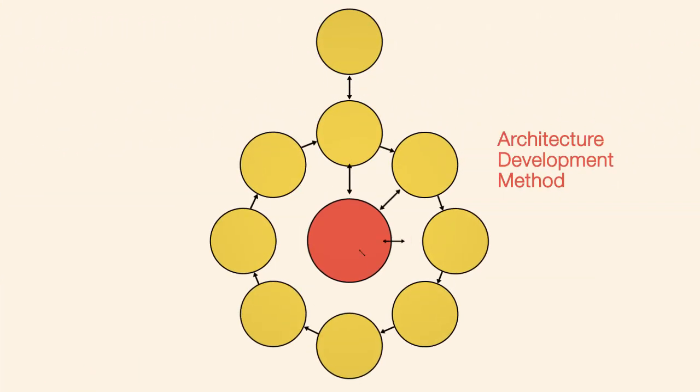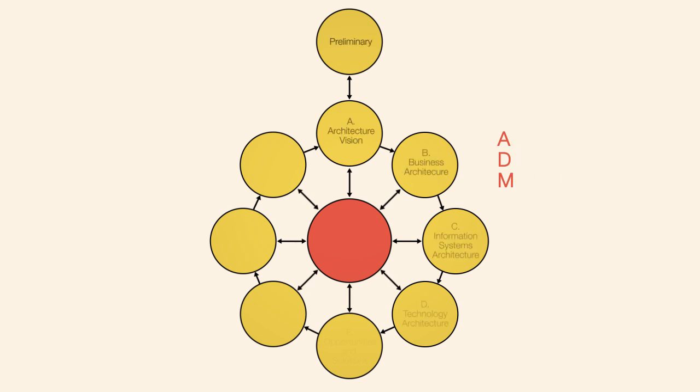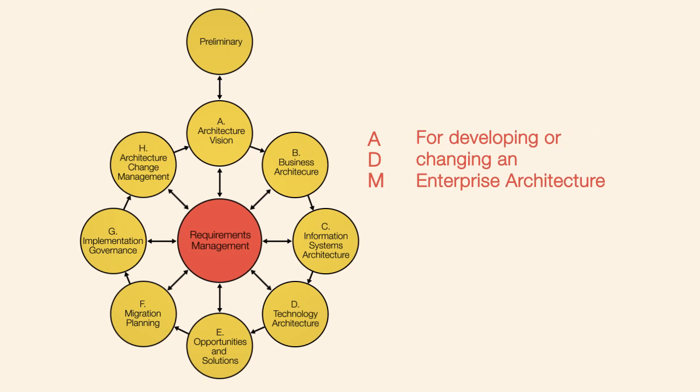The architecture development method, often referred to by its abbreviation as the ADM, is a detailed step-by-step process for developing or changing an enterprise architecture.